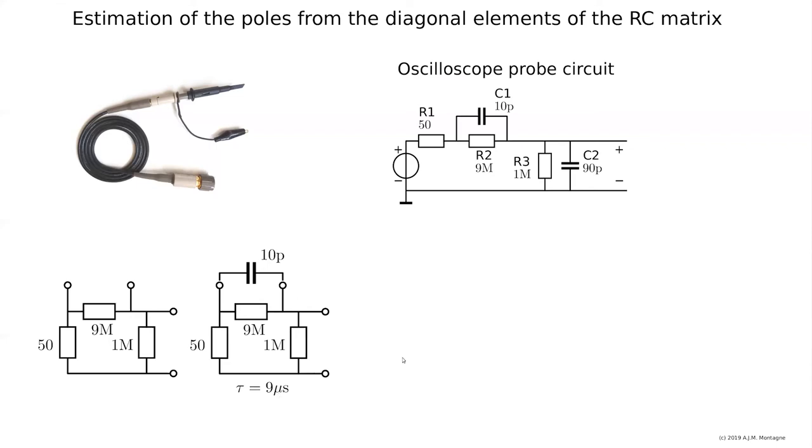Now remove this capacitor and place the 90 pF there. Then we have 90 pF over one megaohm in parallel with 9 megaohm and 50 ohm, which is about 900k also, and it gives us 81 microseconds.